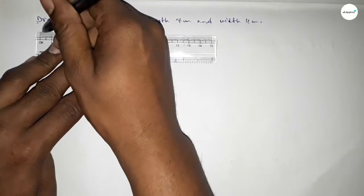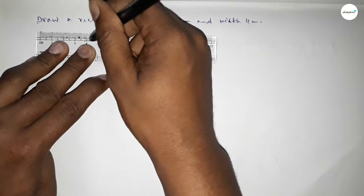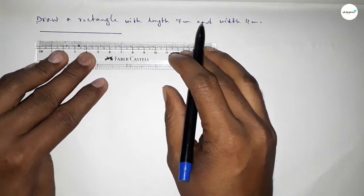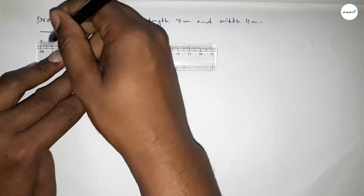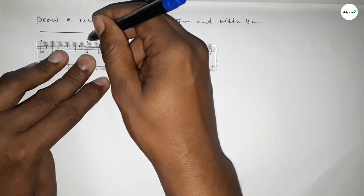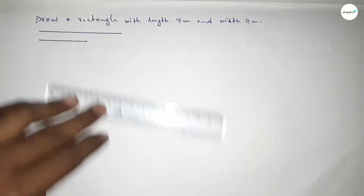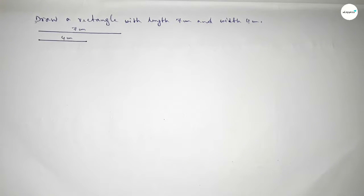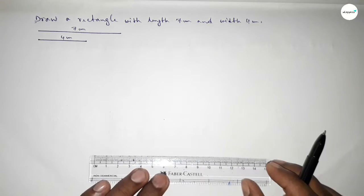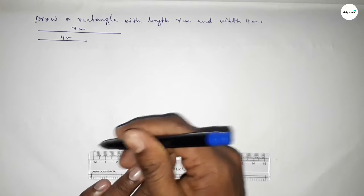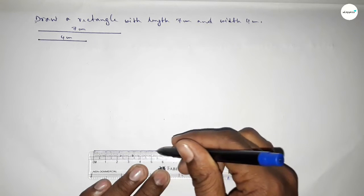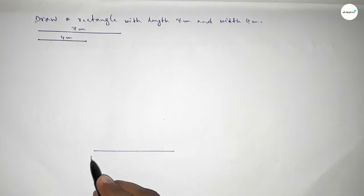First, we draw the length 7 centimeter and the width or breadth 4 centimeter. So this one is 7 centimeter and this one is 4 centimeter. Now we draw a line of length 7 centimeter. Taking here point B and here point C.